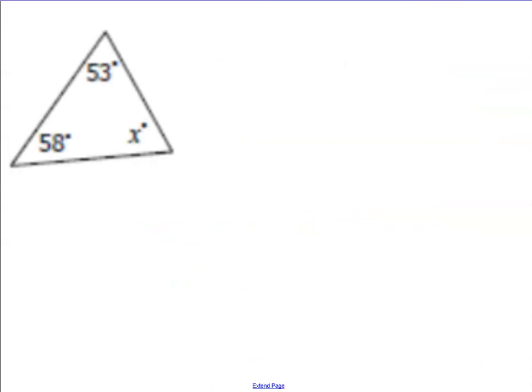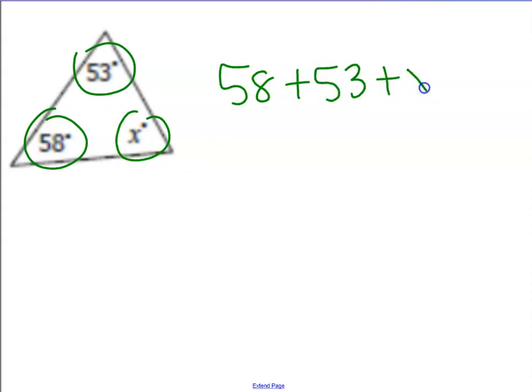Here's my triangle. Here are my three pieces of information. And here's my theorem. Angle 1 plus angle 2 plus angle 3 has to equal 180 degrees. So I use my calculator to add these up, and I get 111.